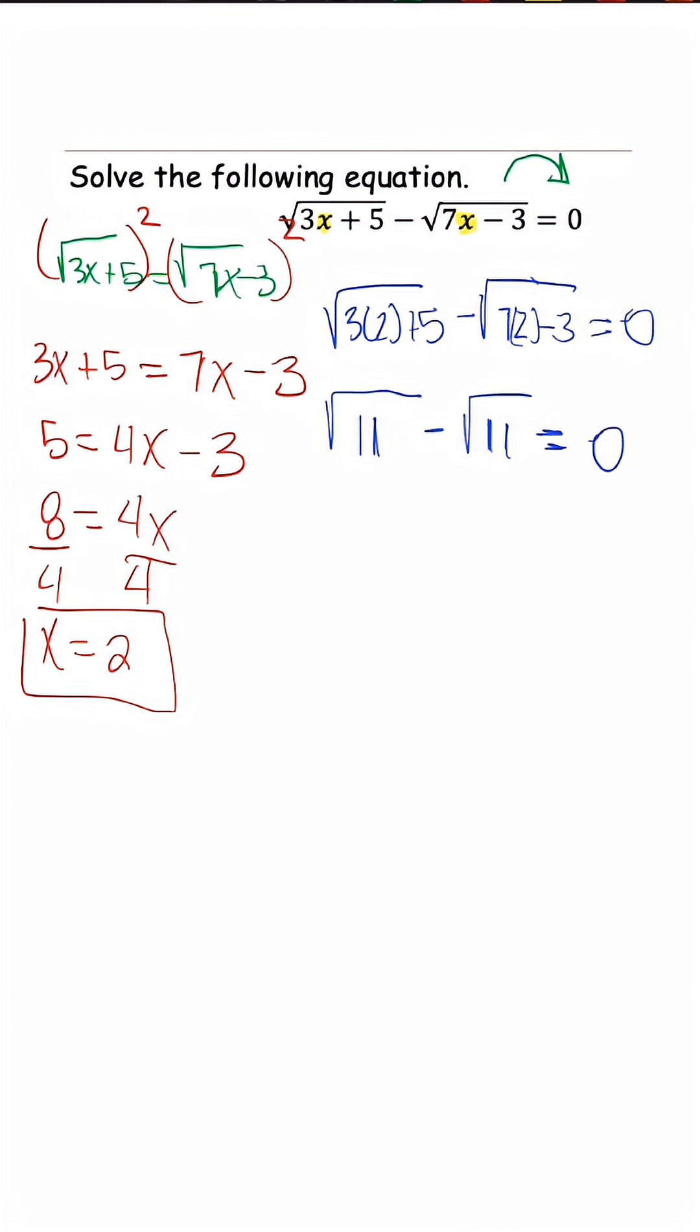So what we notice is that when we simplify the radicals, we're going to have radical 11 minus radical 11, which is going to be 0 is equal to 0. So this would be a true statement for this radical equation.